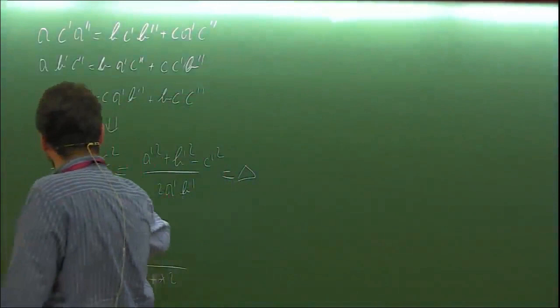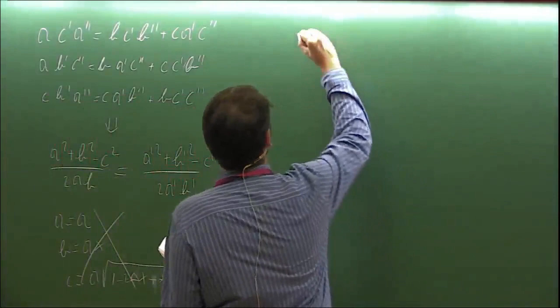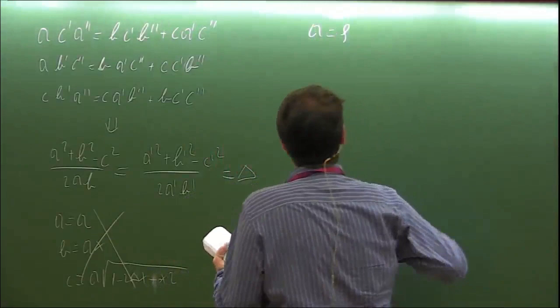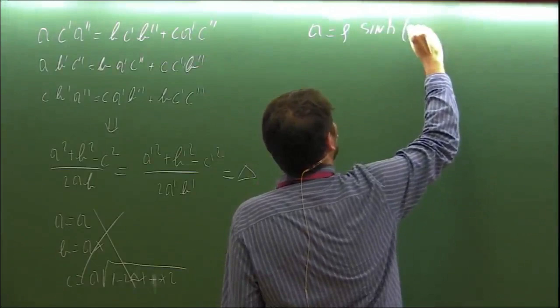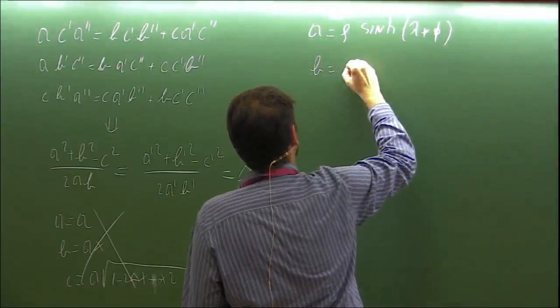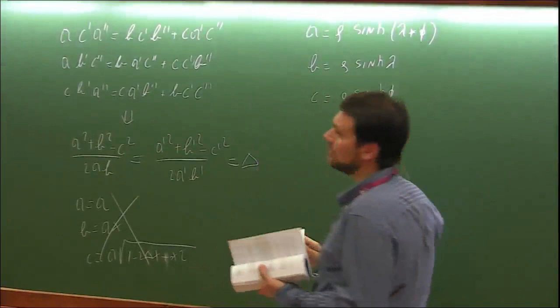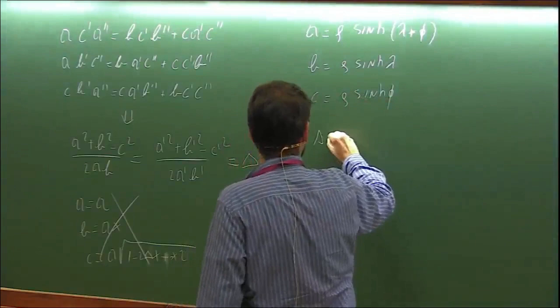The parametrization I will use is: a = ρ sinh(λ + φ), b = ρ sinh(λ), c = ρ sinh(φ), which when plugged in tells you that delta = cosh(φ). If delta is less than one, phi will be imaginary.